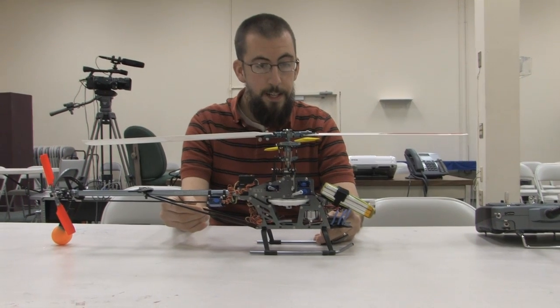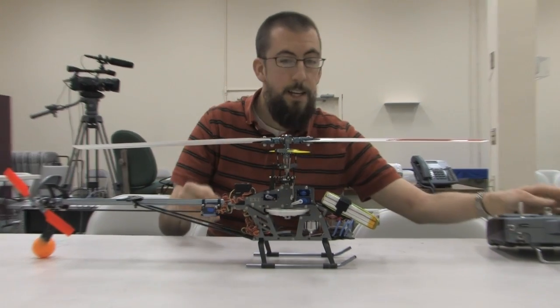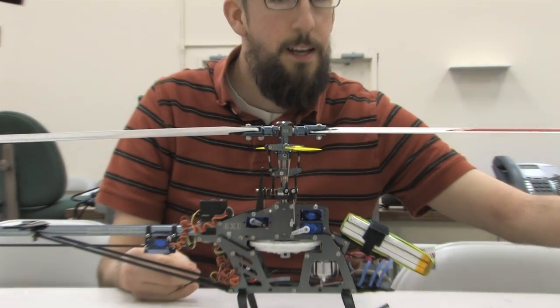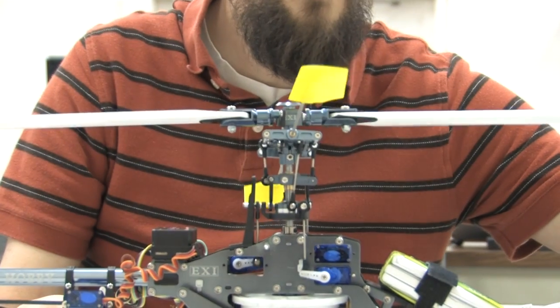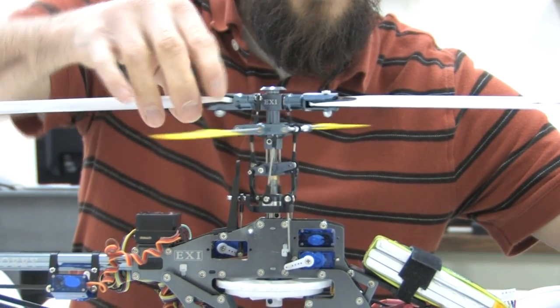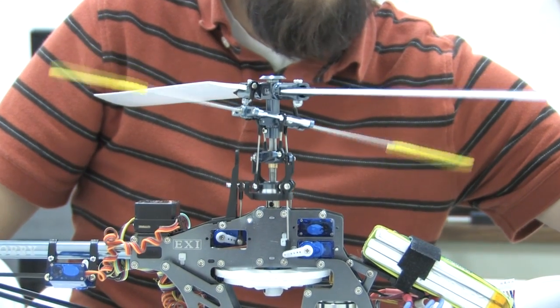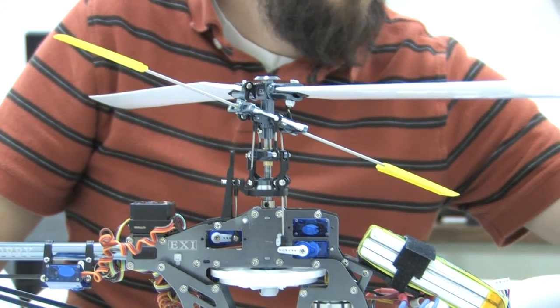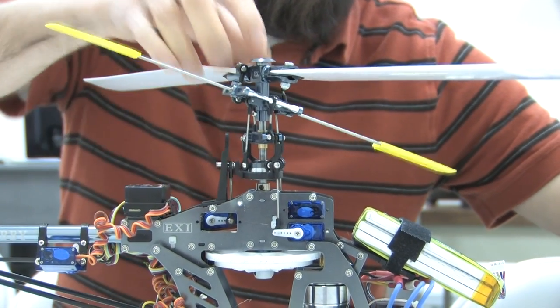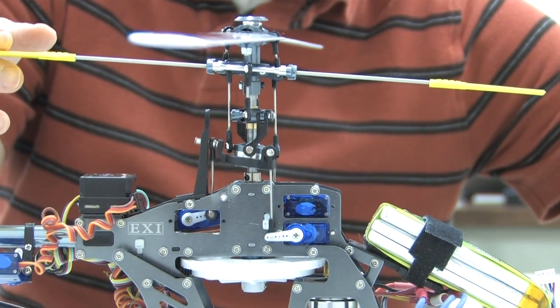The biggest difference in this one is that it's collective pitch, meaning that each blade can change pitch independently. And if I move the stick up now, which is my collective and my throttle, it's called, you can see those blades changing pitch. And also, you can see them change pitch when I move the cyclic too.